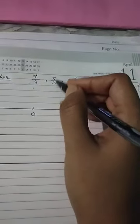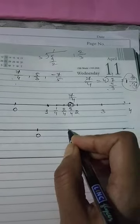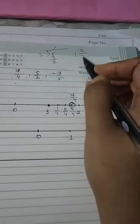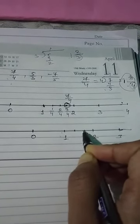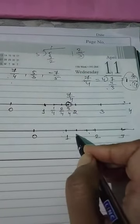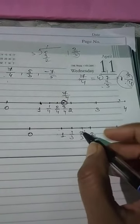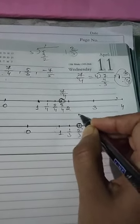Now suppose you have to plot 5/3. First convert 5/3 into a mixed fraction: 3 goes into 5 once with remainder 2, giving 1 whole 2/3. This is positive, so mark 1, 2, 3 on the number line. After 1, divide the segment from 1 to 2 into 3 equal parts — denominator is 3. The parts are 1/3, 2/3, 3/3 after 1. So 1 whole 2/3 is the second mark after 1, which is equal to 5/3.